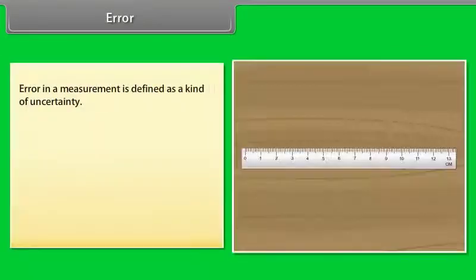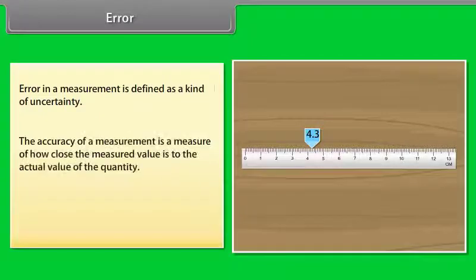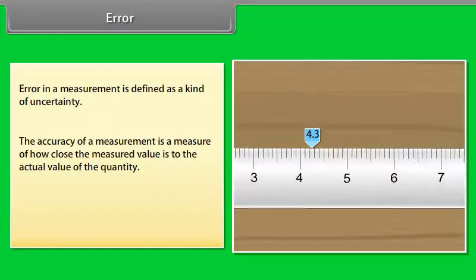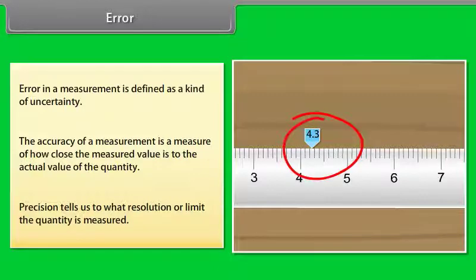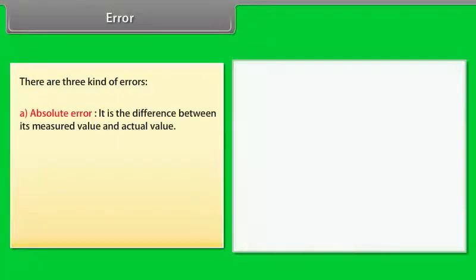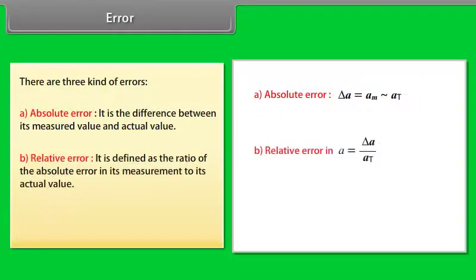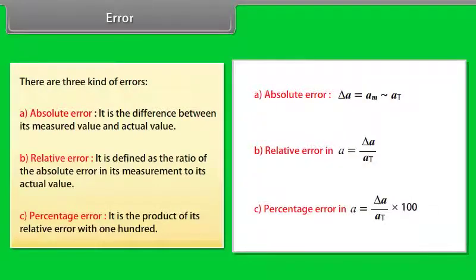Error: The result of every measurement by any measuring instrument contains some uncertainty. Error in a measurement is defined as a kind of uncertainty. The accuracy of a measurement is a measure of how close the measured value is to the actual value of the quantity. Precision tells us to what resolution or limit the quantity is measured. There are three kinds of errors: Number one, Absolute error - it is the difference between its measured value and actual value. Number two, Relative error - it is defined as the ratio of the absolute error in its measurement to its actual value. Number three, Percentage error - it is the product of its relative error with one hundred.